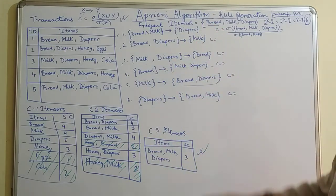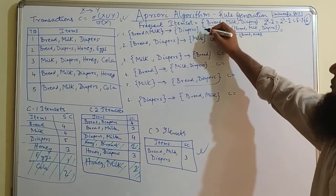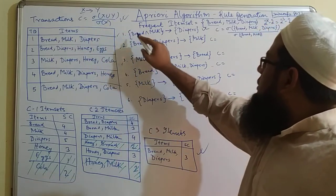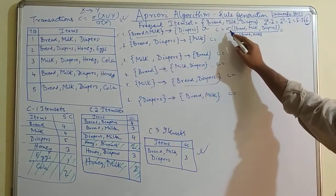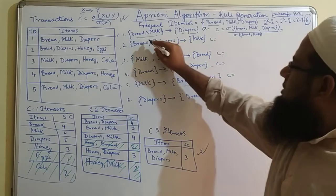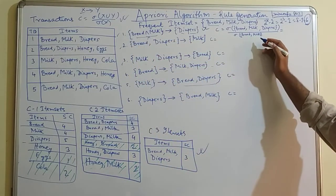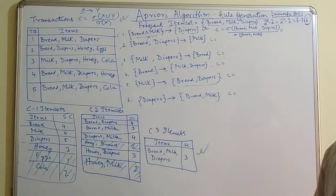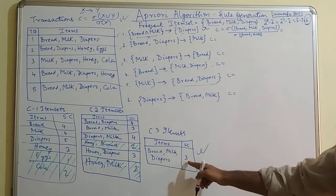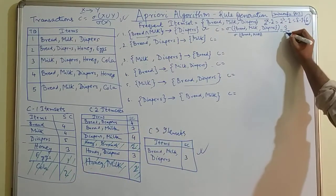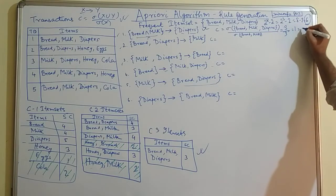For each of the rules we are going to calculate the confidence. For the first rule — bread and milk implies diaper — the confidence is the support of bread, milk, and diaper divided by the support of bread and milk. The support of bread, milk, and diaper is three, and the support of bread and milk is three. So three divided by three is one, which is 100 percent.